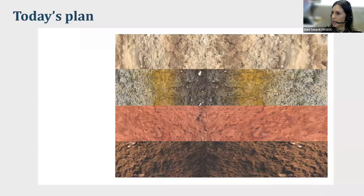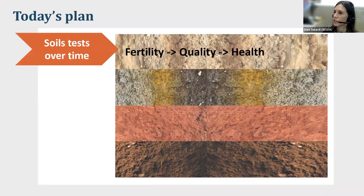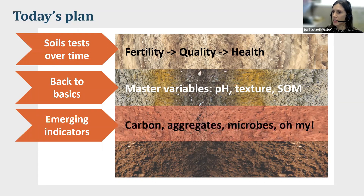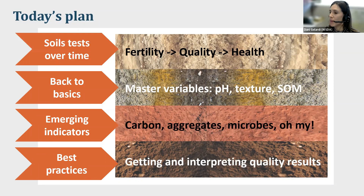Today we'll start by defining some terms. We'll talk about how soil tests have changed over time, from thinking about fertility, to quality, to soil health where we are now. Then we'll go back to basics, talking about why old-school measurements like pH and texture are still so important. Then we'll get into the brave new world of soil health indicators — carbon pools, soil aggregates, and soil microbes — and talk about best practices for getting and interpreting quality results.